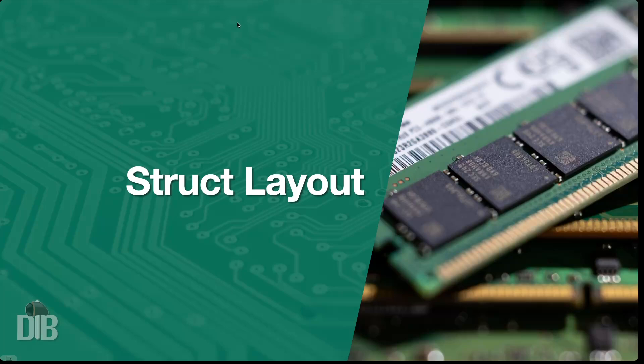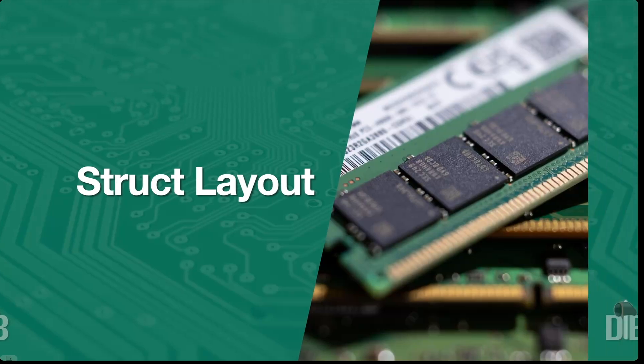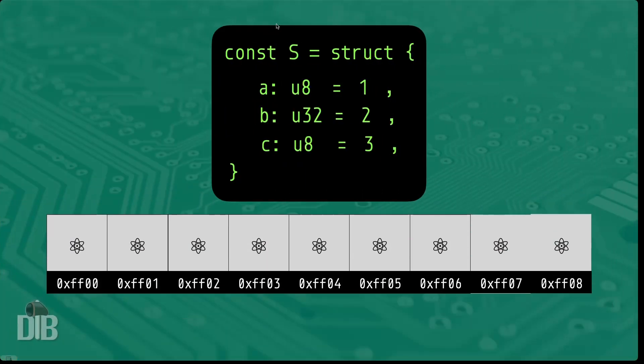We've only seen up till now the native Zig struct type, which we covered in the previous video. This video is going to cover the memory layout of that native Zig struct type. Later on we will talk about packed struct and extern struct, which have a different memory layout, and we'll cover those when we reach those topics. So to begin with, let's say that we have this struct S.